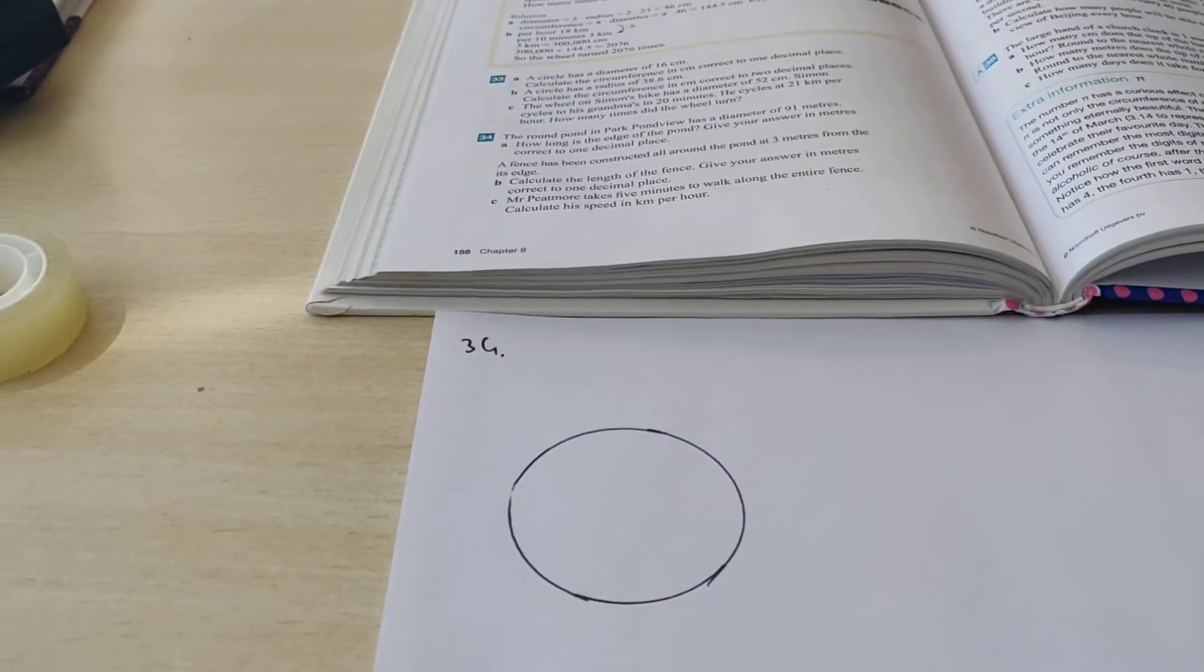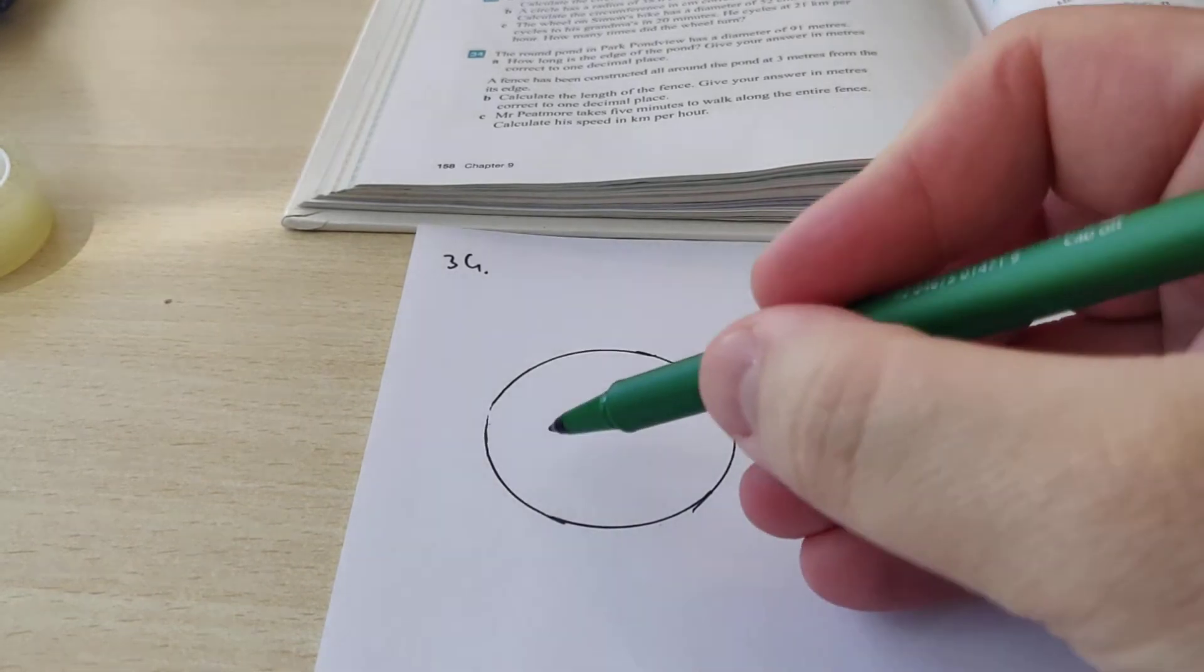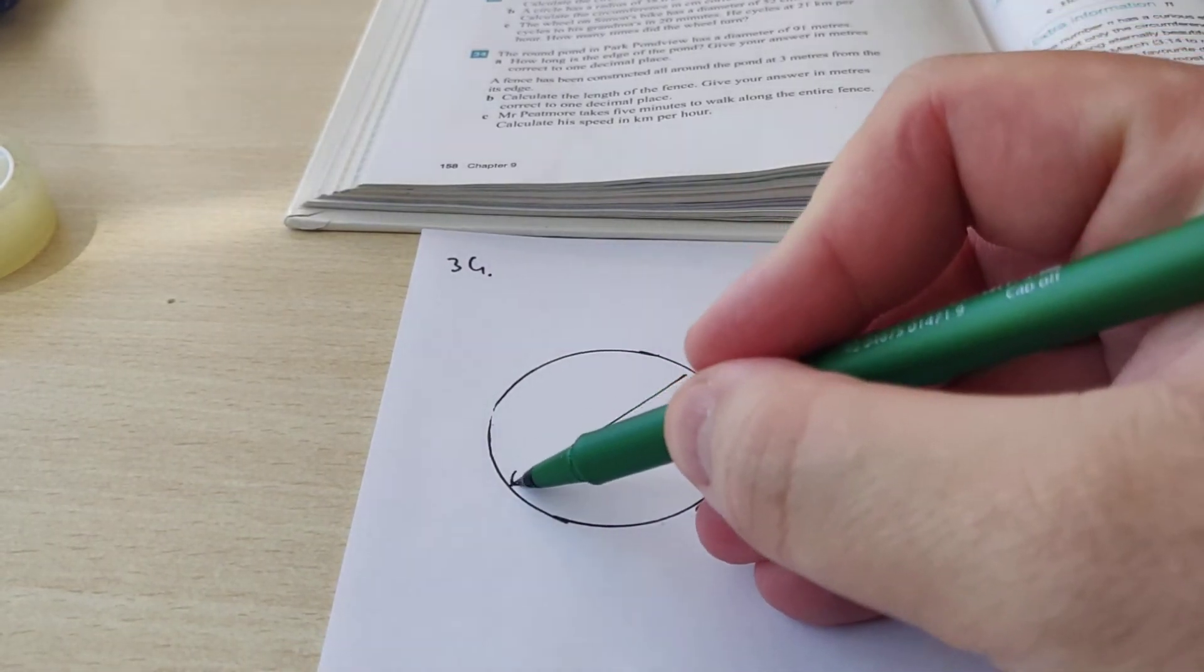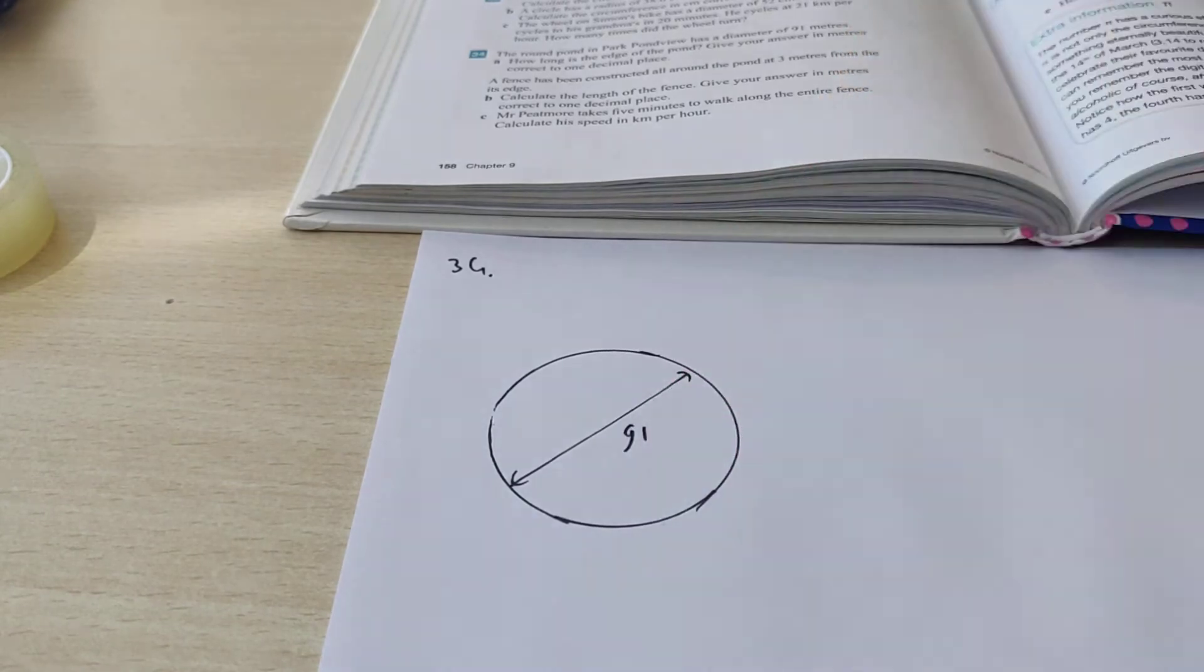Here I made a circle, as you can see. This is the round pond. The diameter, from one side to the other, is 91 meters according to the question.